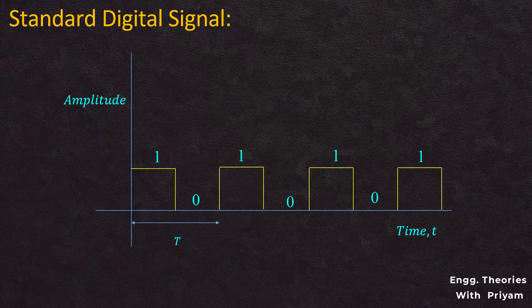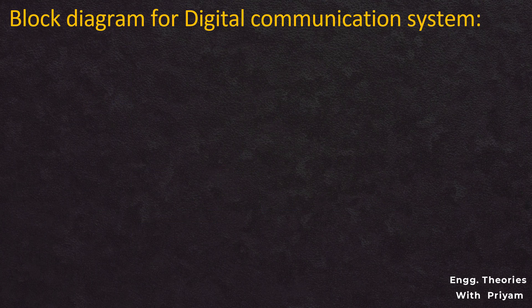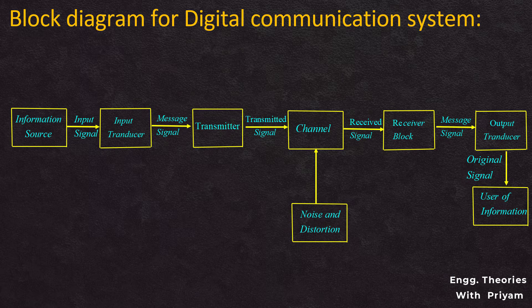A standard example of the digital signal is a square wave. A square wave consists of higher and lower values represented by 1 and 0. For half the time period the signal is 1, and for the other half it is 0. The block diagram for digital communication is the same as the basic block diagram for the communication system.